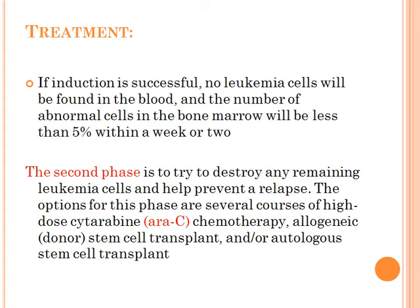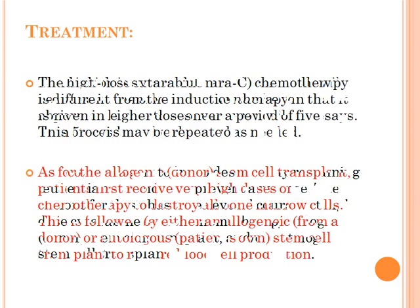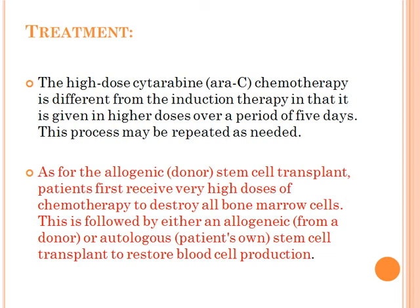If induction is successful, no leukemia cells will be found in the blood and the number of abnormalities in the bone marrow will be less than five percent within a week or two. The second phase aims to destroy any remaining leukemia cells and help prevent relapse. Options include several courses of high-dose cytarabine chemotherapy, which is given in higher doses over a period of five days, and this process may be repeated as needed.